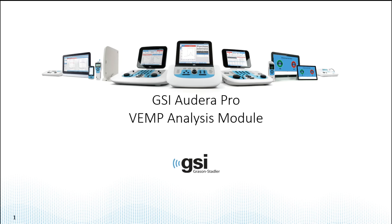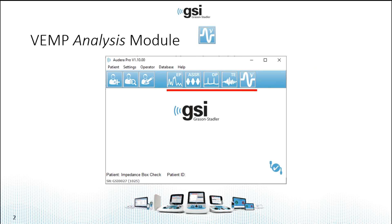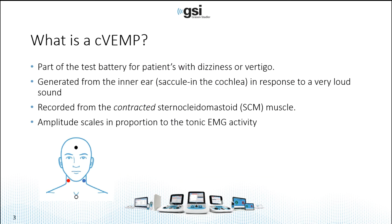Today we'll be talking about the GSI Audera Pro VEMP analysis module. The VEMP analysis module will appear on the opening screen of the Audera Pro software. It's different than the four test modules in that you only access the VEMP analysis module when you're done collecting your C VEMPs or OVEMPs and you need to analyze. Today we're going to cover how to use the VEMP analysis module, and briefly before we do that, I want to cover a few things on C VEMP and OVEMP.